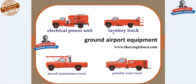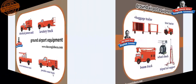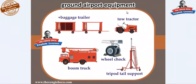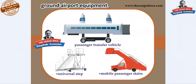Ground airport equipment: electrical power unit, lavatory truck, aircraft maintenance truck, portable water truck, baggage trailer, tow tractor, wheel choke, tripod tail support, boom truck.